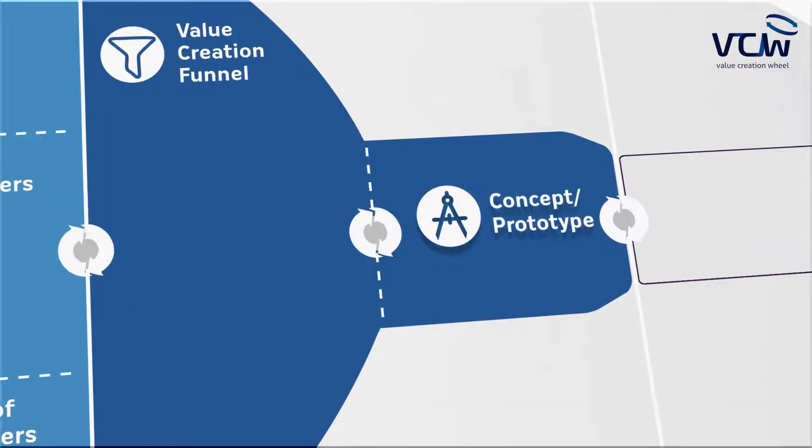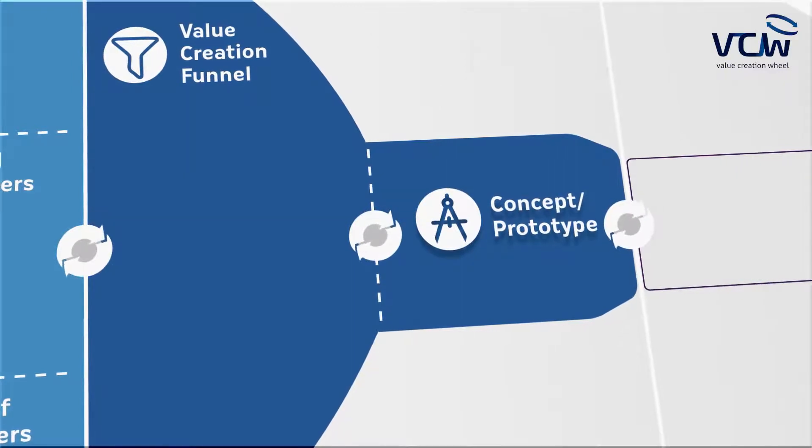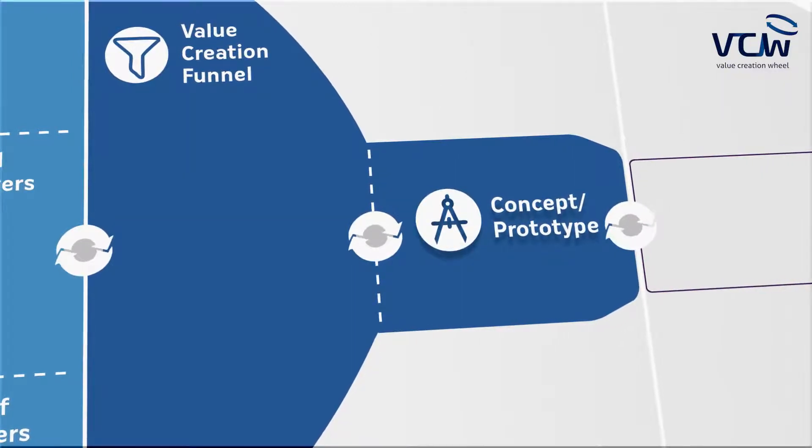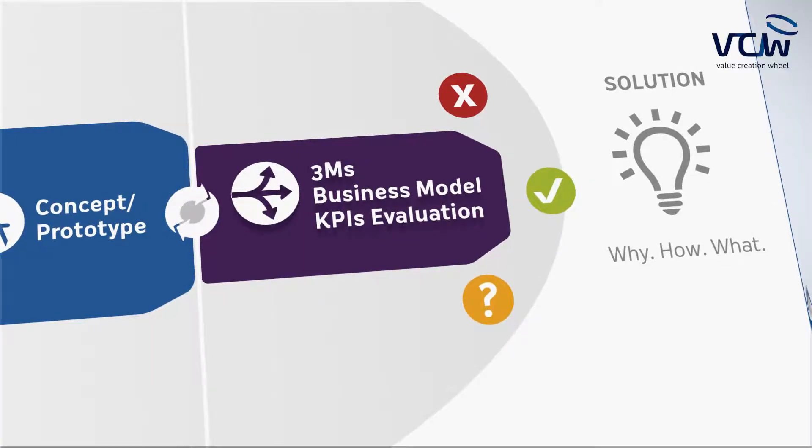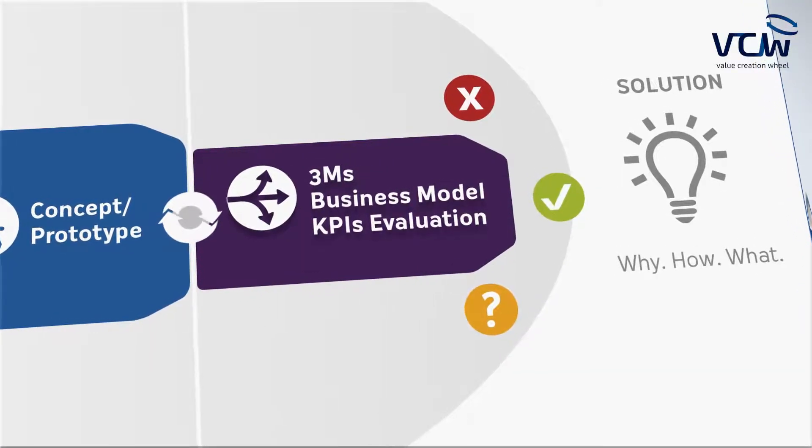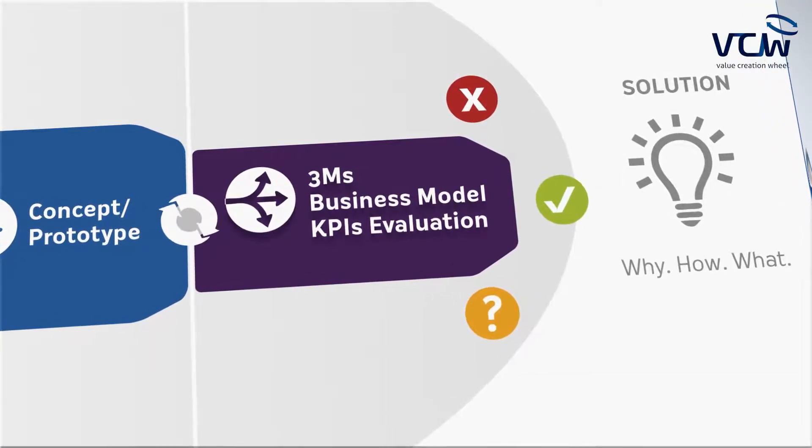Once we have the final solution or final solutions, we move to the prototype stage — phase four B — where we design how we're going to implement this solution. Then we move to the implementation stage where the key decision makers again play a critical role, namely in terms of the definition of the business model and of the three M's: manpower, minute, and money.